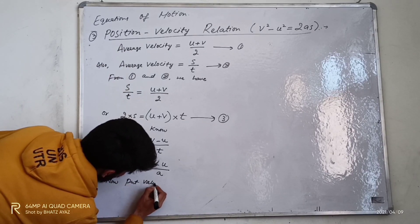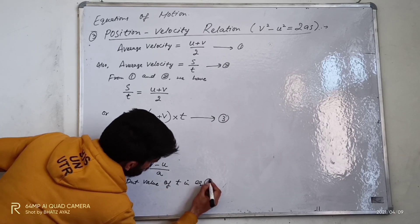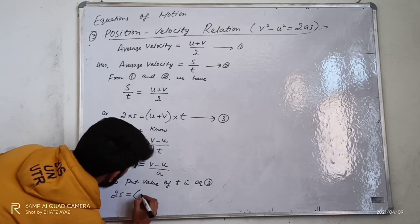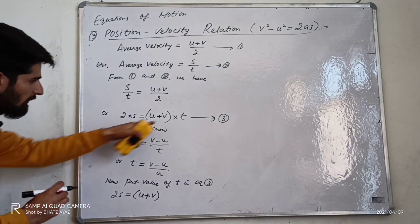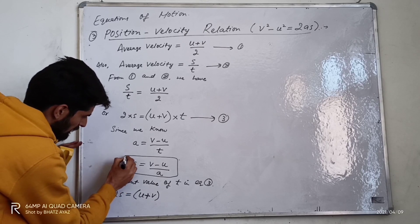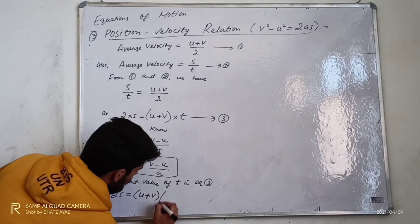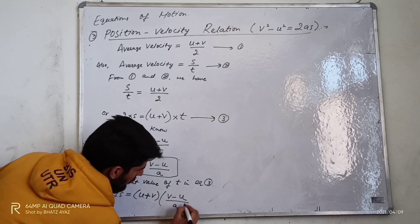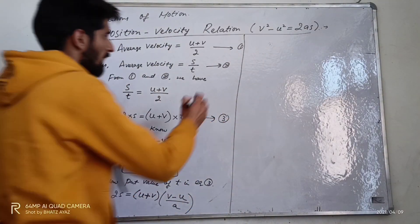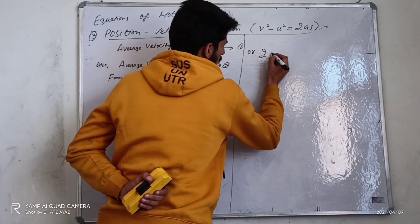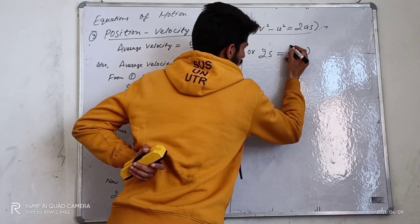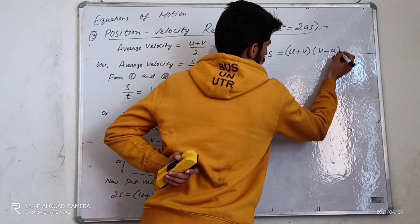Now put the value of t into the equation. We have 2s is equal to u plus v into t, where t is equal to v minus u divided by a. So I can write: 2s is equal to (u plus v) into (v minus u) whole divided by a.